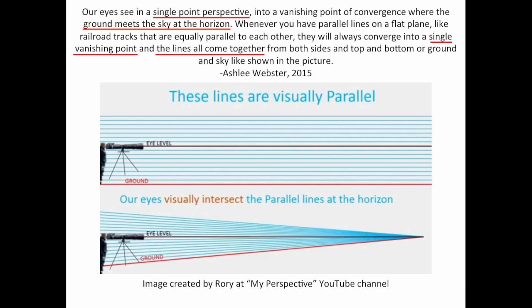Like shown in the picture. So according to what Ashley is saying here, the ground slopes up and the sky slopes down, and where they intersect, that is the horizon, and that is where the vanishing point is. So I'd just like to examine a few pictures and see if that's actually the case.